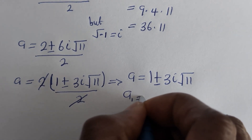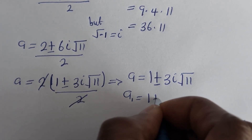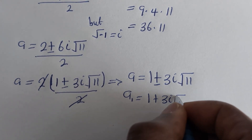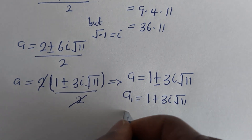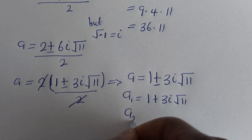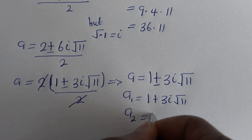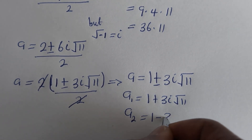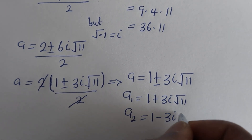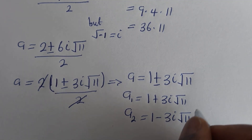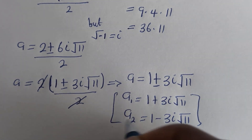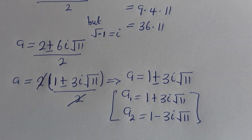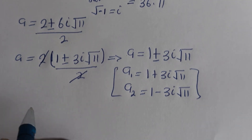Therefore A1 is equal to 1 plus 3i square root of 11, and A2 is equal to 1 minus 3i square root of 11. These are the values of A. Now let us solve for B.